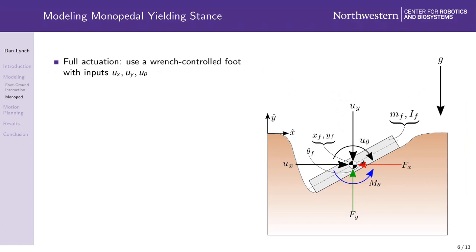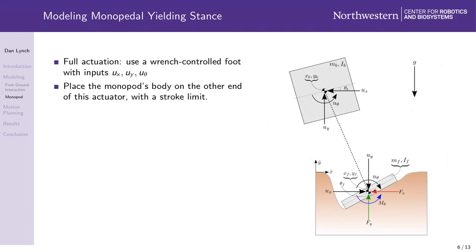Our monopod is fully actuated during stance, so we model force inputs Ux and Uy and a torque input Uθ applied to the foot. We then simply place the robot's body on the other end of this actuator and enforce an upper limit on the distance between the body and the foot, which we call the stroke limit.